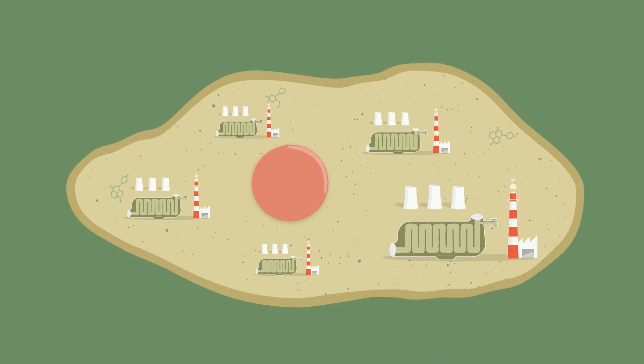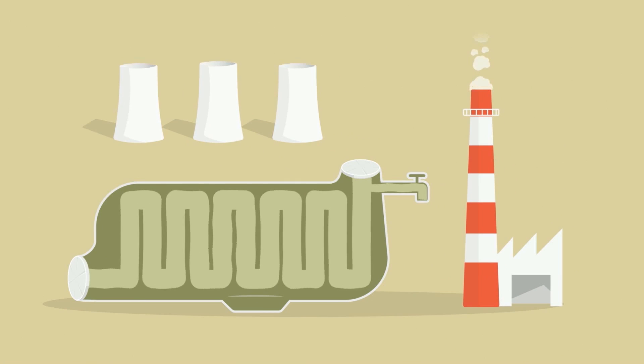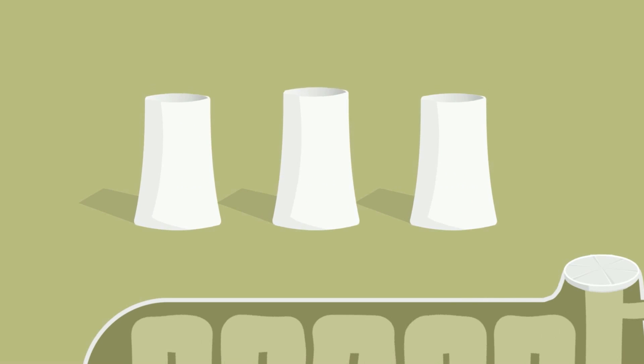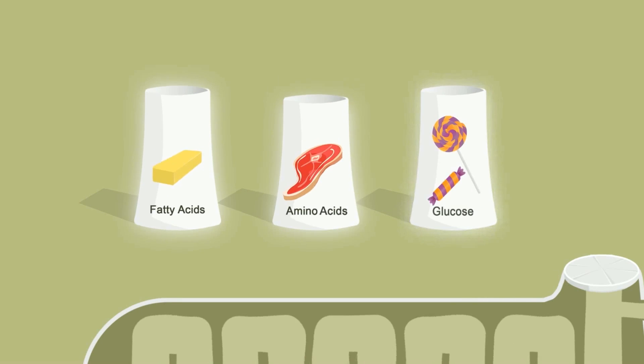Inside each of your cells are little power plants called mitochondria. They can generate ATP for your body to use as a source of energy. The energy can be generated from fatty acids, amino acids, or glucose.